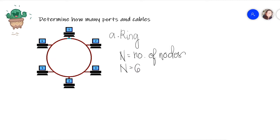Next, we're going to find the number of cables. For ring topology, the number of cables is equal to the number of nodes. So for this problem, the number of cables is equal to six.